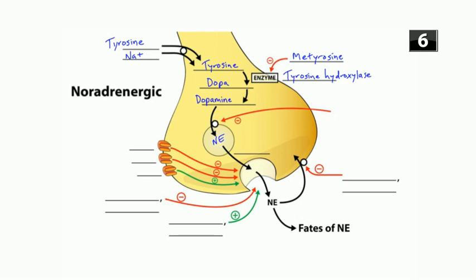Dopamine is converted to norepinephrine and packaged into vesicles. Reserpine inhibits this packaging of norepinephrine into the vesicle. Calcium causes vesicles to fuse with the cell membrane and release their contents into the synapse. Norepinephrine is now in the synapse.